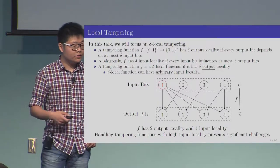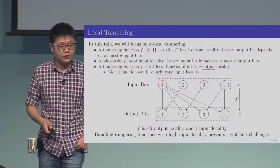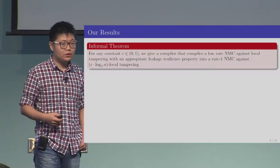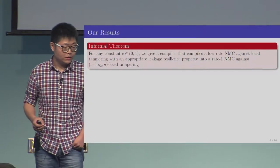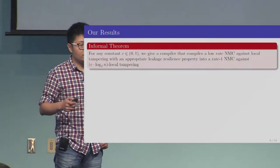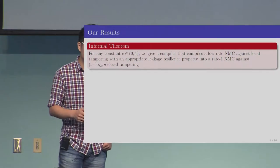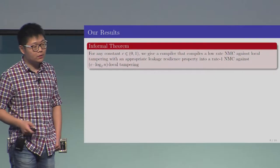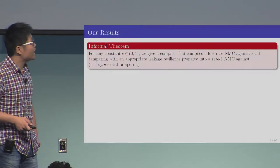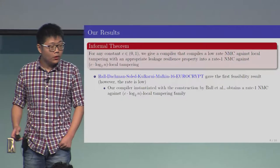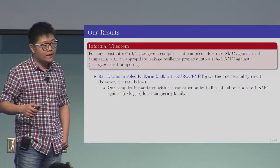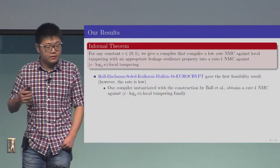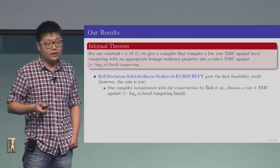This fact actually turns out to present significant technical challenges when designing non-malleable code. In this work, we gave a compiler that compiles a low-rate non-malleable code into a rate 1 non-malleable code. Specifically, for any constant C between 0 and 1, we gave a compiler that takes a low-rate non-malleable code against local tampering with an appropriate leakage resilience property and produces a rate 1 non-malleable code against C times log n local tampering.